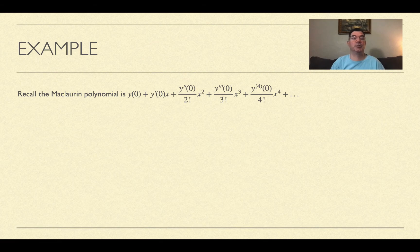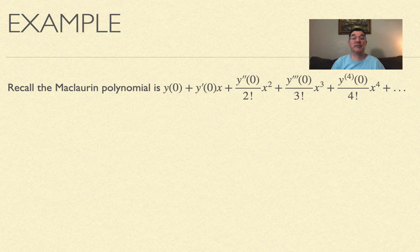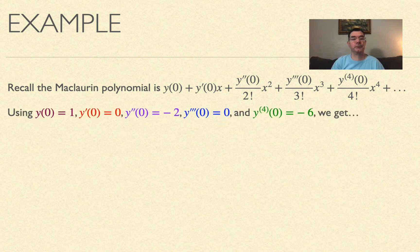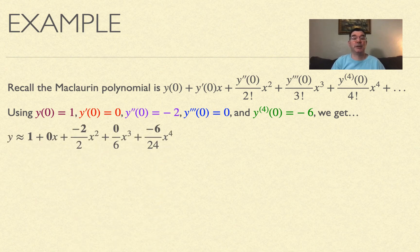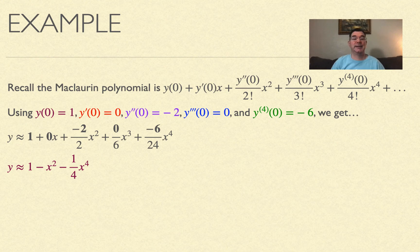The Maclaurin polynomial looks like: the function value at zero, plus the first derivative at zero times x, plus the second derivative at zero over 2! times x squared, plus the third derivative at zero over 3! times x cubed, plus the fourth derivative at zero over 4! times x to the fourth, and so on. Using y(0) = 1, y′(0) = 0, y″(0) = −2, y‴(0) = 0, and y⁽⁴⁾(0) = −6, I get: 1 + 0x + (−2/2)x² + (0/6)x³ + (−6/24)x⁴. Simplifying, the three non-zero terms are 1 − x² − (1/4)x⁴.